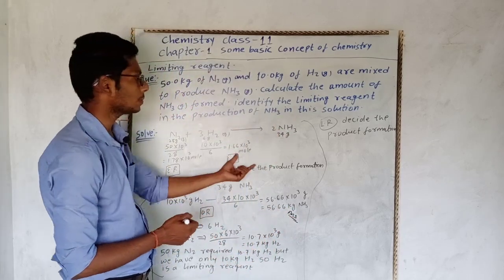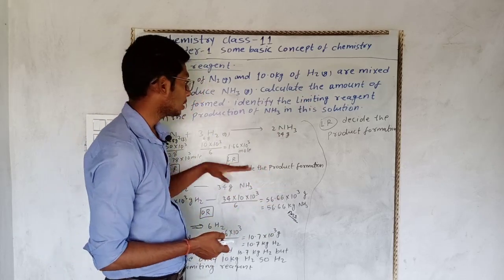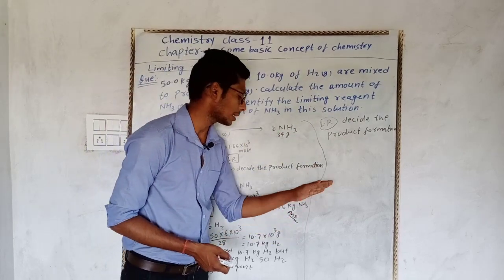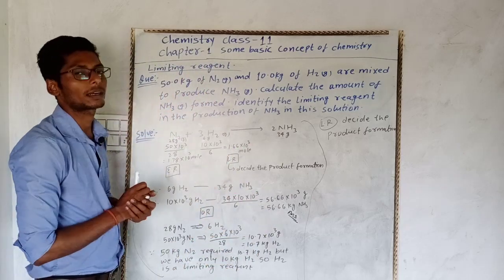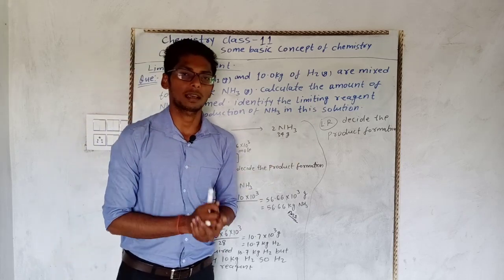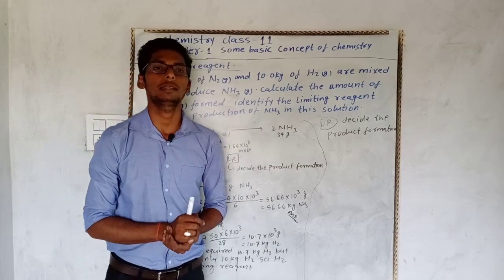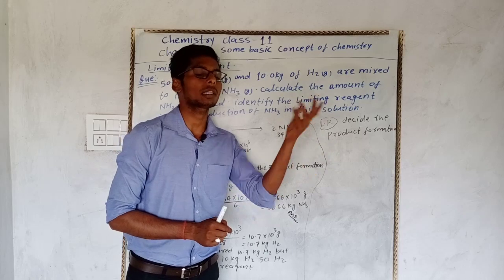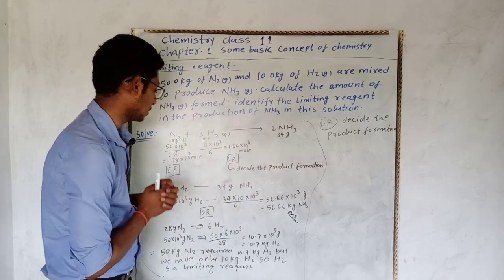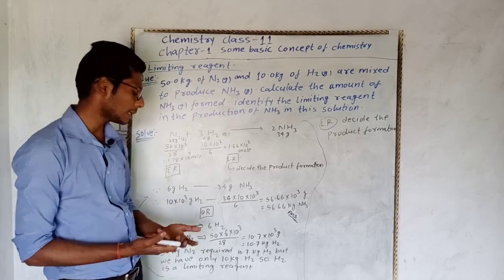दो questions पूछे थे: limiting reagent कौन है और ammonia का amount कितना produce होगा। दोनों हमने find कर लिया। Competitive exam में ऐसे question के लिए: दोनों का number of moles find करो, जो number lesser है वह limiting reagent होगा।